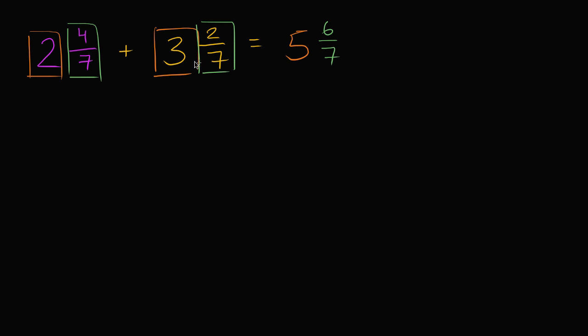How did I do that? How did I just only add the fraction parts or add the whole parts? The way I did that is because two and four-sevenths is the same thing as two plus four-sevenths. And then plus three and two-sevenths is the same thing as three plus two-sevenths. So all I did over here, two and four-sevenths plus three and two-sevenths is two plus four-sevenths plus three plus two-sevenths.